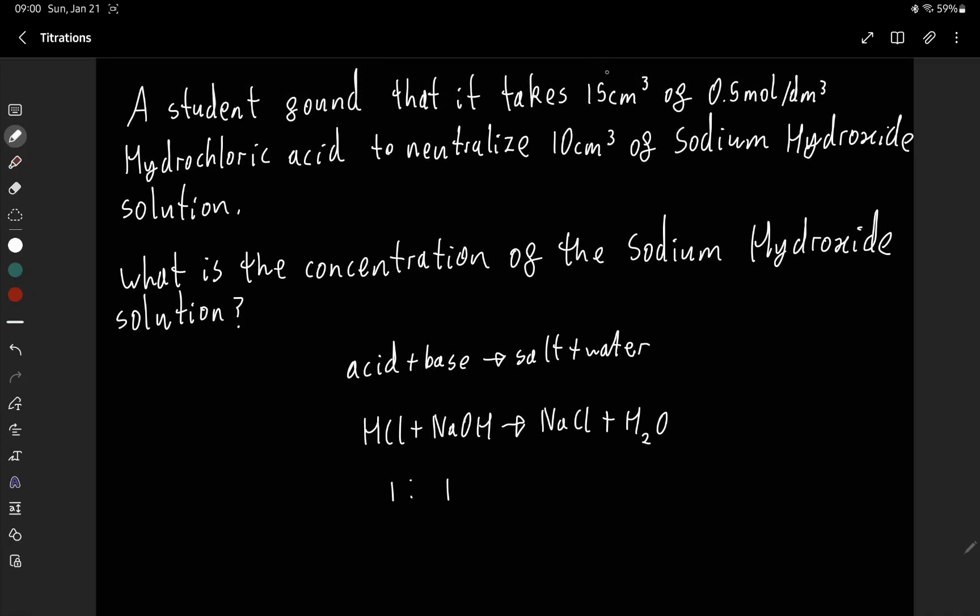And so what you have to do, whenever you see centimeters cubed, especially in these concentration calculations, always convert it to decimeters cubed. And so that's just one thousand centimeters cubed equals one decimeter cubed.